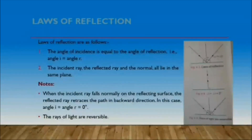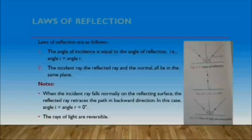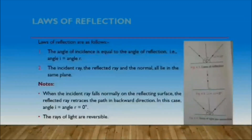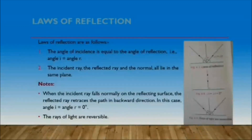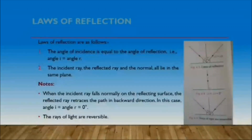We have two laws of reflection — this is a very important topic. The first law states that the angle of incidence is always equal to the angle of reflection. That is, angle I, the angle of incidence, is equal to angle R, the angle of reflection. The second law of reflection is that the incident ray, the reflected ray, and the normal all lie in the same plane.